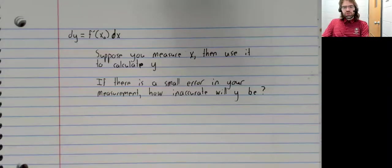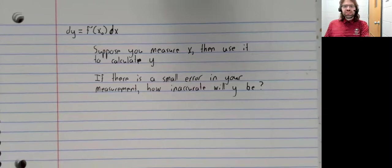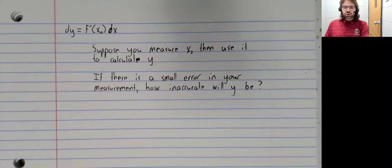Suppose you have a relationship between X and Y, where X is some quantity that you can physically measure. And you measure X, and then use that value to calculate Y. Well, any time you measure anything,